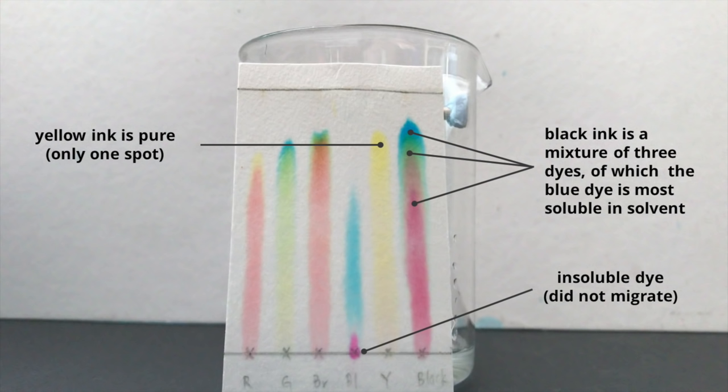The blue ink is a mixture of two different dyes, one blue and one purple. And the purple dye is insoluble in water, that's why it remained at the start line and did not migrate up the paper.